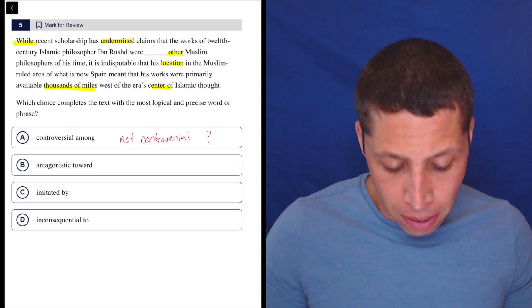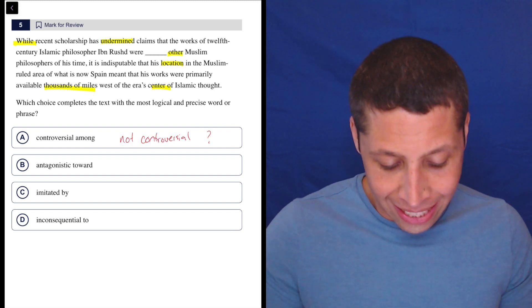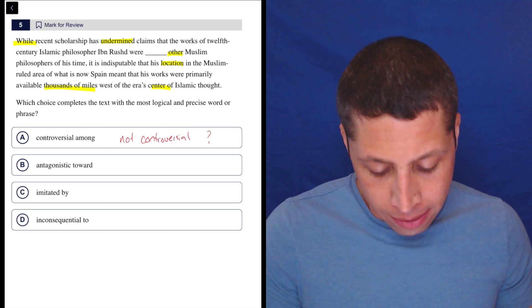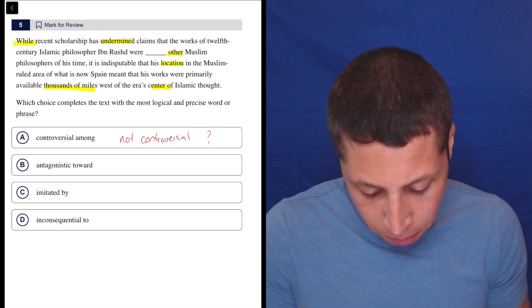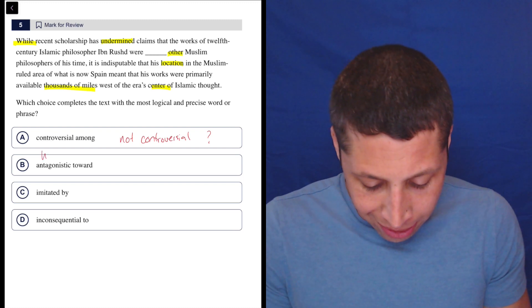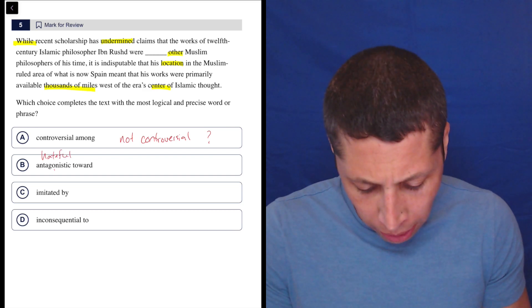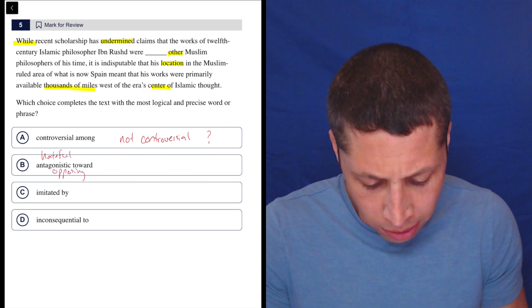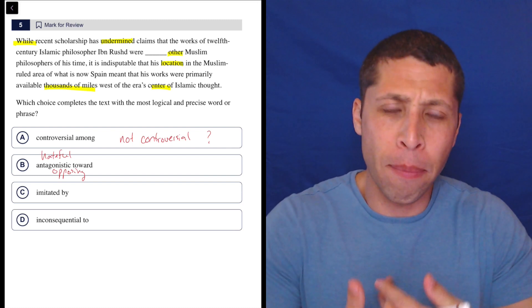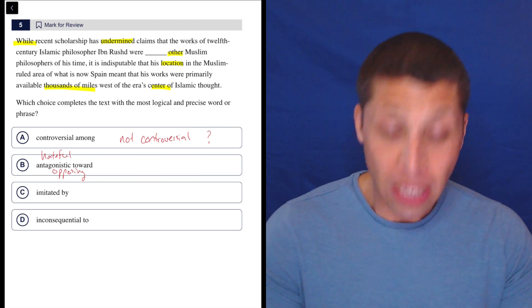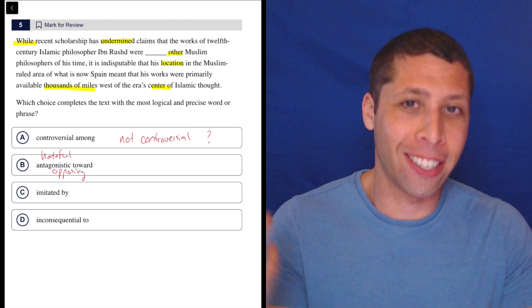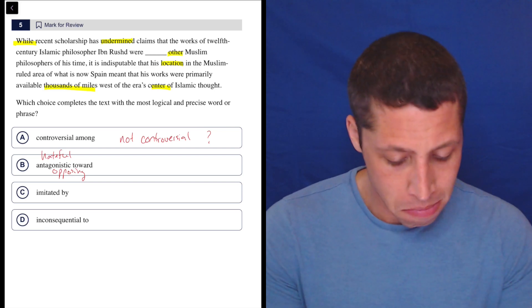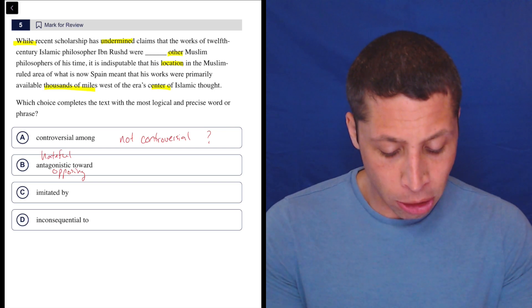So again, while recent scholarship undermined that his works were antagonistic toward other philosophers, it's indisputable that his location is thousands of miles away from the center. So antagonistic means like hateful toward, or kind of just like in general, like opposing. If you're an antagonist, you fight against something or someone. Think about like in a novel, you've probably heard of a protagonist. That's like the main character. The antagonist is kind of like the villain.